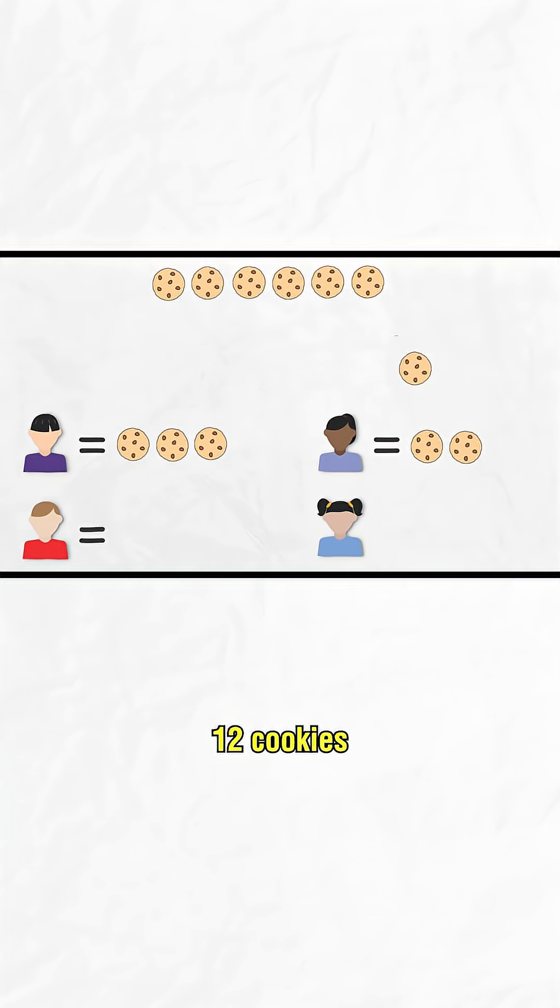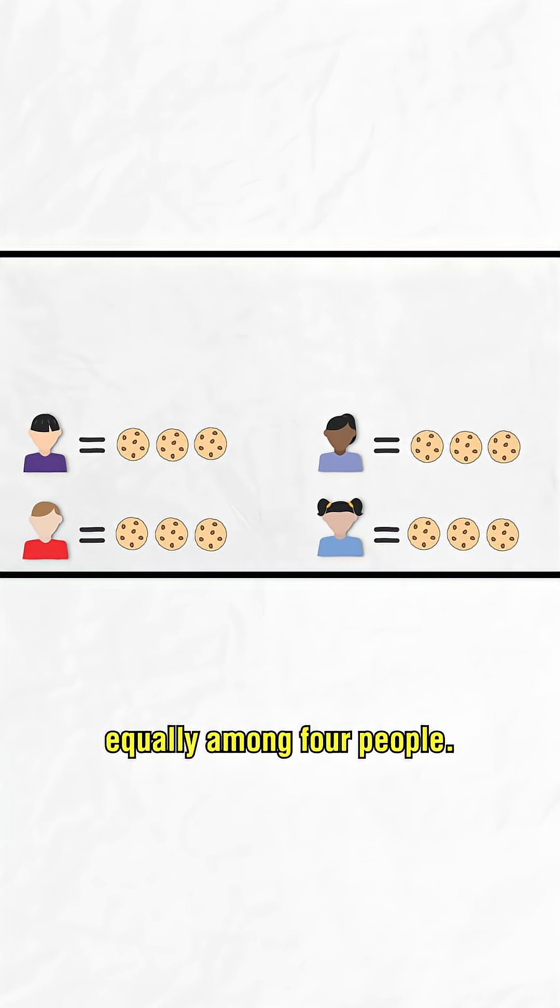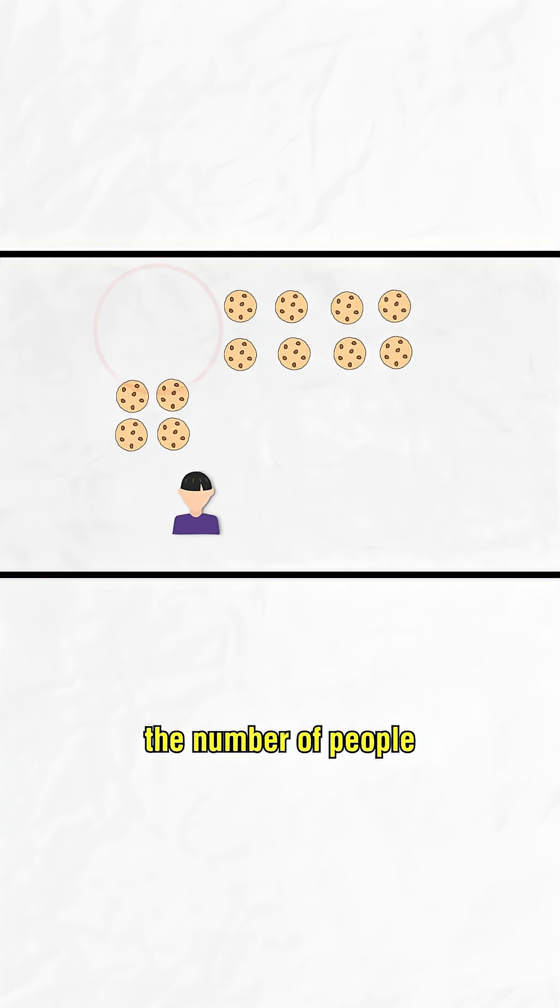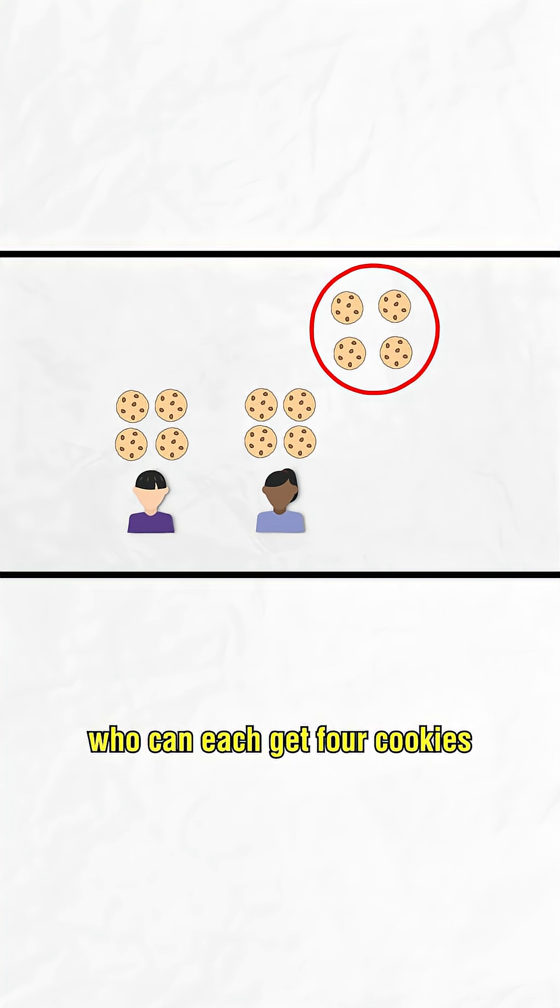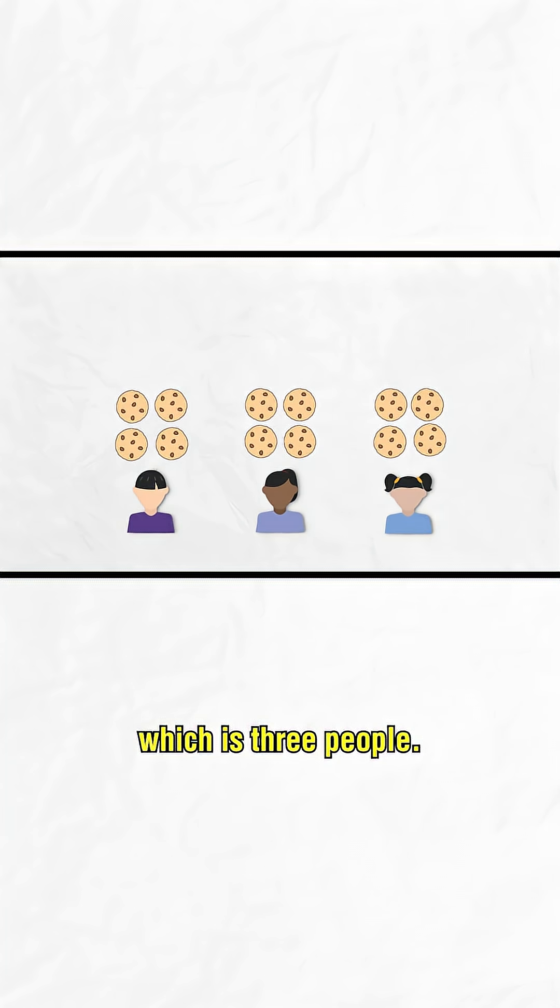This could mean sharing 12 cookies equally among 4 people or figuring out the number of people who can each get 4 cookies from a batch of 12, which is 3 people.